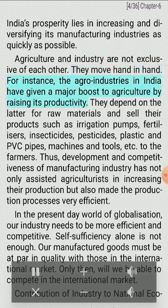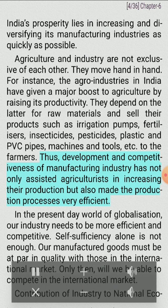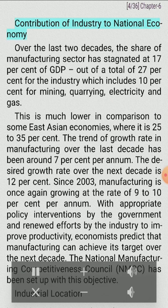Agriculture and industry are not exclusive of each other; they move hand in hand. The agro-industries in India have given a major boost to agriculture by raising its productivity. They depend on agriculture for raw materials and sell their products such as irrigation pumps, fertilizers, insecticides, pesticides, plastic and PVC pipes, machines and tools etc. to the farmers. Development and competitiveness of manufacturing industry has assisted agriculturists in increasing their production and made the production processes very efficient. In the present-day world of globalization, our industry needs to be more efficient and competitive. Our manufactured goods must be at par in quality with those in the international market so we can compete internationally.